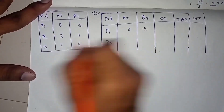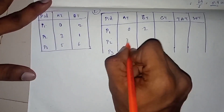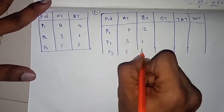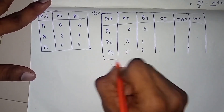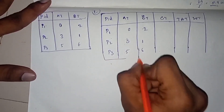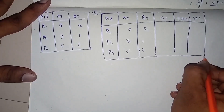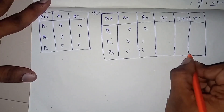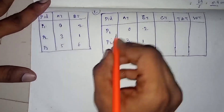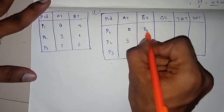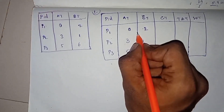You need to start the code, keep it 0, 3, 1, 5, 6. Now we need to calculate the completion time. We need to adjust the completion time, arrival time, and burst time.